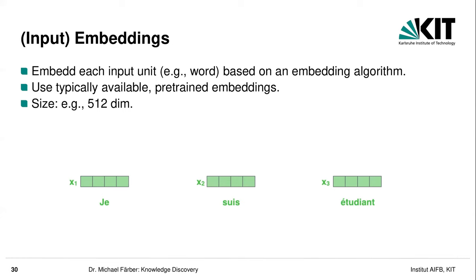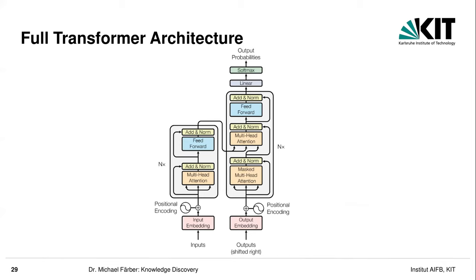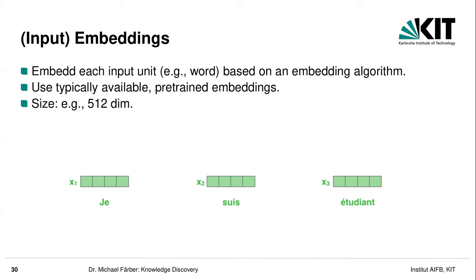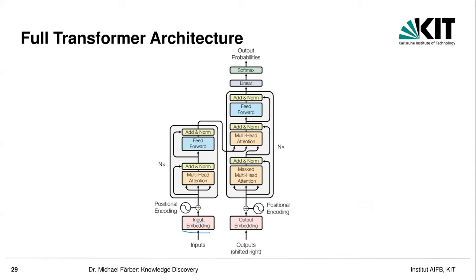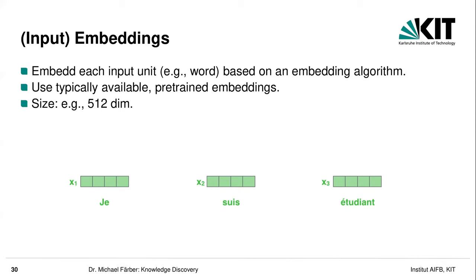Let's look at the input embeddings. For example, we want to translate one sentence into another language. The idea is to use word embeddings — typically pre-trained embeddings already available. If we have some word, we have an internal sub-symbolic representation as a vector x_1, x_2, and so on. The dimension is 512 in the paper, though it must fit the overall architecture. The encoder and decoder need to work with this dimension, but otherwise it is flexible, and the authors experimented with different dimensions.